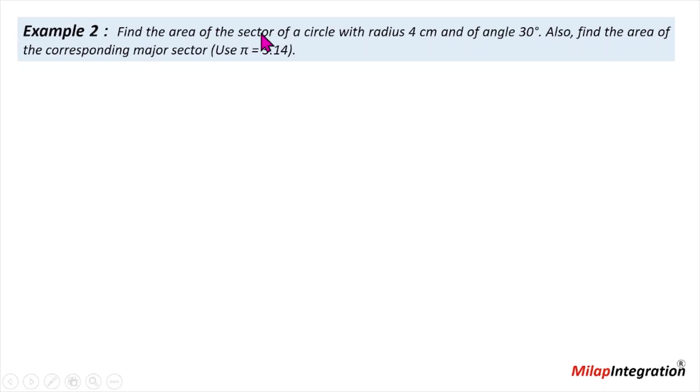Example number 2: Find the area of a sector of a circle with radius 4 cm and of angle 30 degrees.